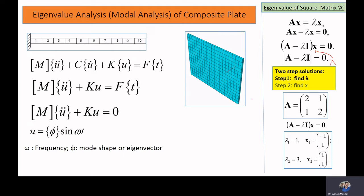For a plate, the first mode will be a twisting motion because that is the easiest way for that plate to bend. For a cantilever beam, the first mode shape shows the beam bending in the simplest manner, and the second mode shape shows a more complex bending pattern. Basically, mode shapes indicate how easily the structure can bend.